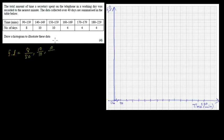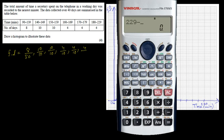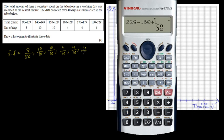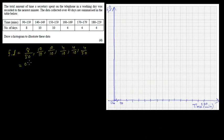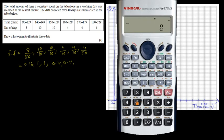Then we have 10 divided by 159 minus 150, which is 9 plus 1 = 10. Then we have 4 divided by 10, and another 4 divided by 10. Then the last one: 229 minus 180 plus 1 gives 50, so 4 divided by 50. Calculating: 8 by 50 = 0.16; 10 by 10 = 1; 10 by 10 = 1; 4 by 10 = 0.4; 4 by 10 = 0.4; and 4 divided by 50 = 0.08.